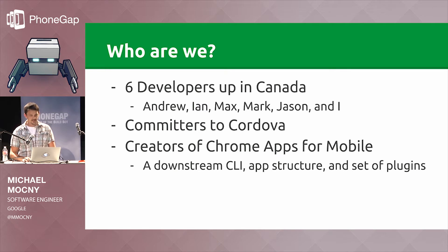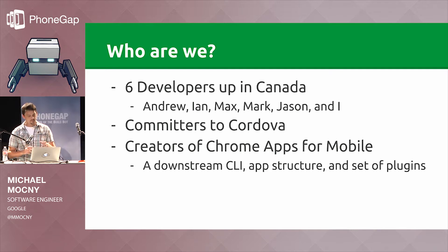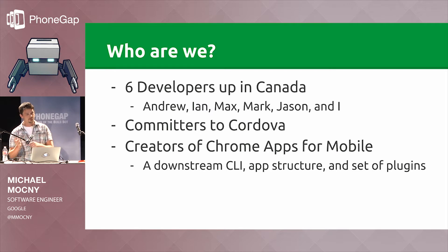There are six developers up in Canada. You've seen us on the lists if you do any development or follow the commits or dev list. We are committers to Cordova, but we are also creators of something called Chrome Apps for Mobile. Chrome Apps for Mobile is a downstream CLI and also an application structure and set of plugins to bring Chrome packaged apps as they exist for desktop over to mobile on top of Cordova.